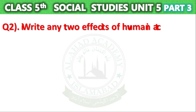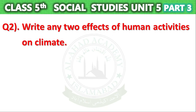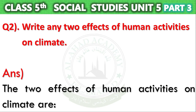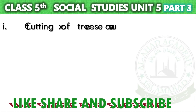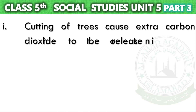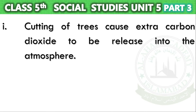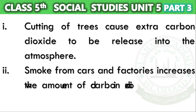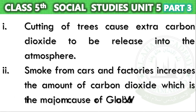Question No. 2: Write any two effects of human activities on climate. Answer — The two effects of human activities on climate are: First, cutting of trees causes extra carbon dioxide to be released into the atmosphere. Second, smoke from cars and factories increases the amount of carbon dioxide, which is the major cause of global warming.